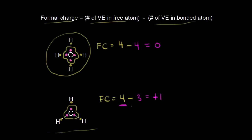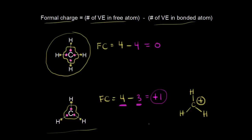Carbon is supposed to have four valence electrons. It has only three around it, so it lost one of its electrons, giving it a formal charge of plus one. So over here on the right, we have carbon with three bonds to hydrogen, and this carbon has a plus one formal charge, which we represent with a plus charge next to the carbon. Notice that carbon does not have an octet — it has only six electrons around it, and that's okay. Carbon can never exceed an octet, but it can have less than eight. A carbon with a plus one formal charge is called a carbocation.